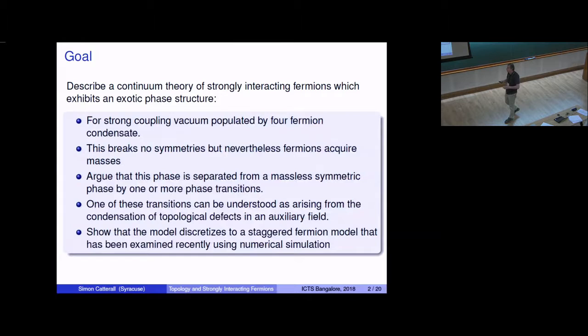In fact, I'm going to argue that this sort of massive phase, massive symmetric phase, is separated from the massless phase by one or more phase transitions. And I'll tell you a little bit about the nature of those phase transitions as we go along. Specifically, one of the transitions we're going to interpret is due to a condensation of topological defects. Those topological defects will be associated with an auxiliary field that you use to introduce the four-fermion interaction in the usual way.